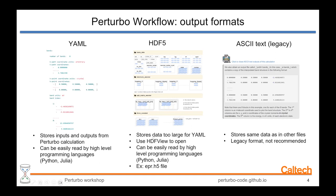You can use what's called HDFView, which is software that will allow you to open and visualize the HDF5 files. This can also be easily read by high-level programming languages such as Python and Julia. Finally, there are ASCII text files, which we call the legacy format files. Perturbo still outputs these files, but all the information in them is redundant — it's already in the YAML and HDF5 files. They just contain the same information in a slightly different format.